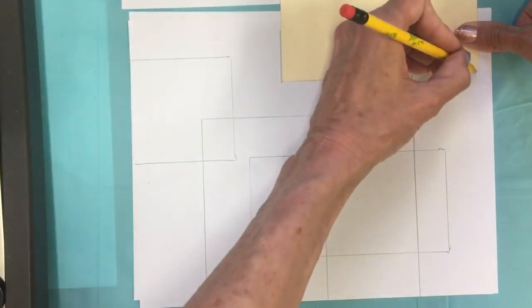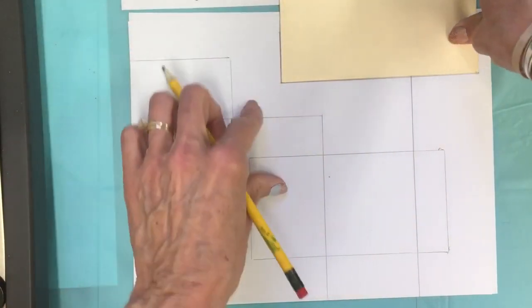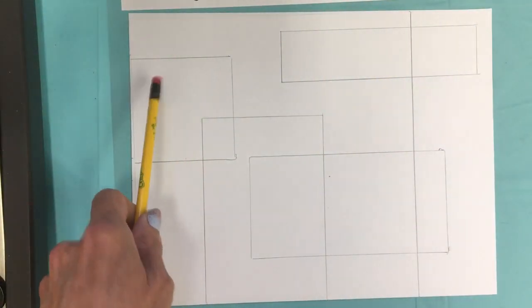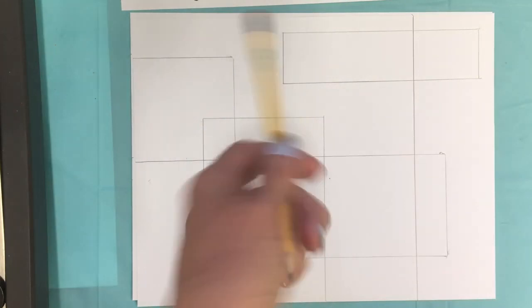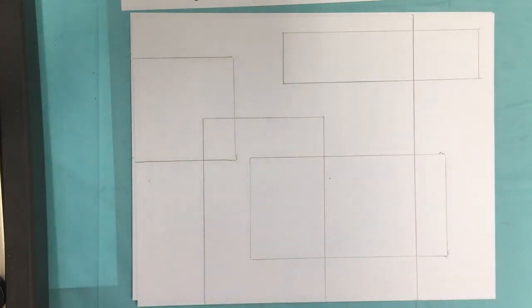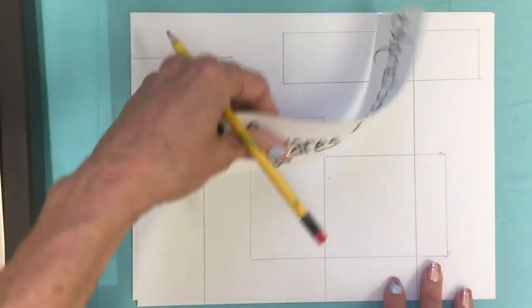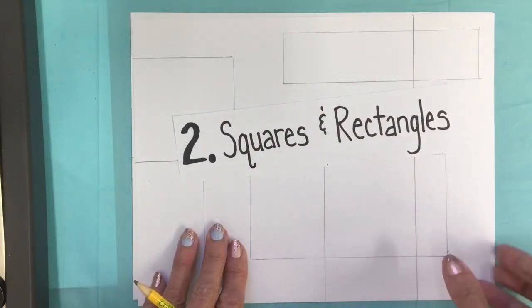So again the idea is just to break up my paper with a few shapes. So now I have one, two, three, four, five rectangles. Maybe I could do another one, but that looks pretty good for me with the squares and rectangles.